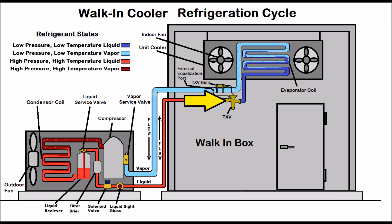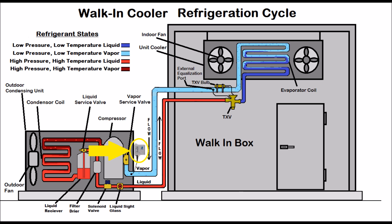The thermostatic expansion valve reads the superheat and tries to maintain it. In a walk-in box you're looking for about six to eight degrees of superheat once the temperature inside is lower. The superheated low pressure low temperature vapor refrigerant leaves the walk-in box and heads back to the outdoor unit. You may also have a low pressure control mounted on the suction line before it goes to the compressor. Then the low pressure low temperature vapor heads back into the compressor and the cycle starts all over.